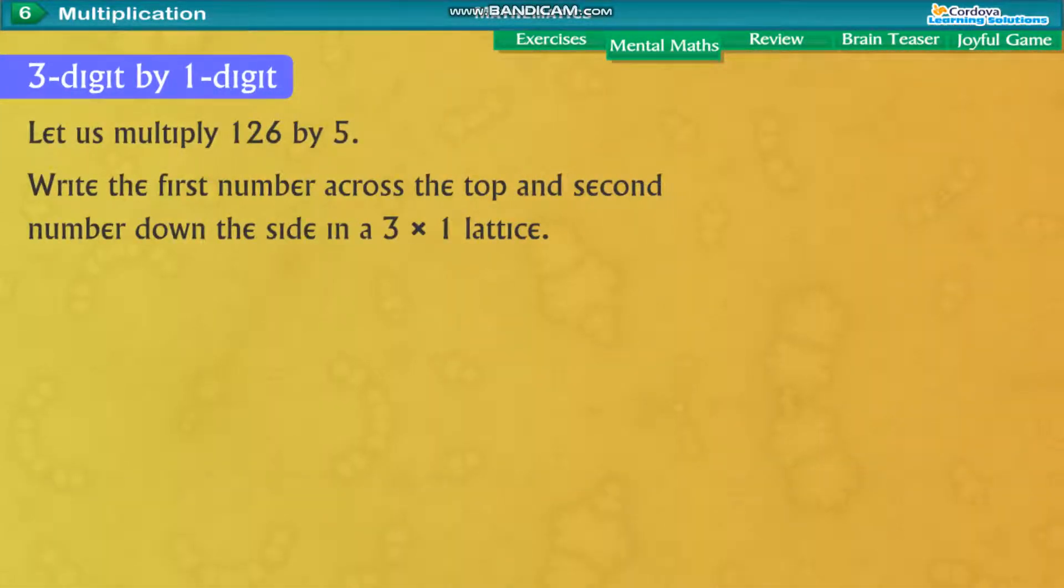3 digit by 1 digit. Let us multiply 126 by 5. Write the first number across the top and second number down the side in a 3 into 1 lattice.